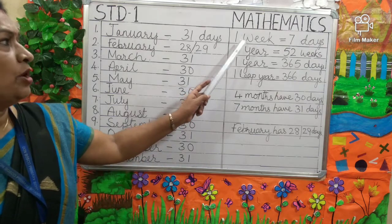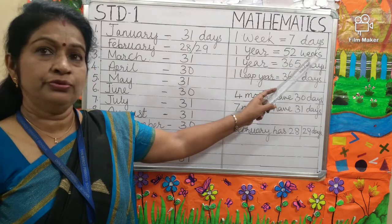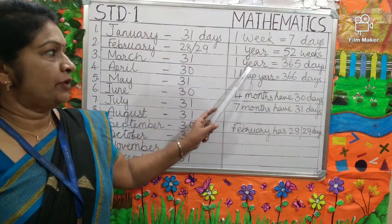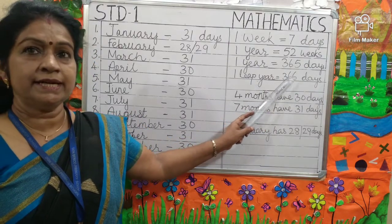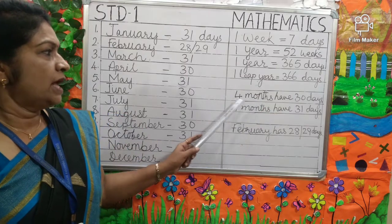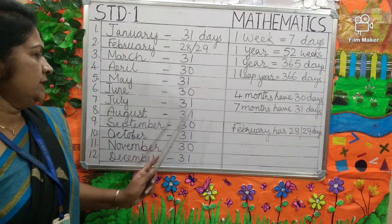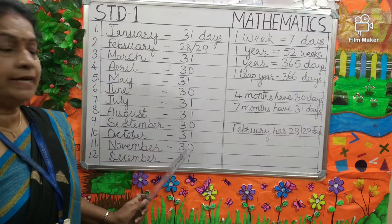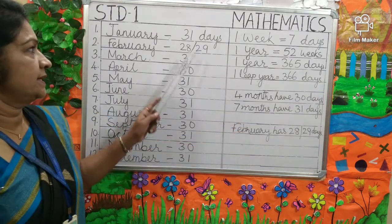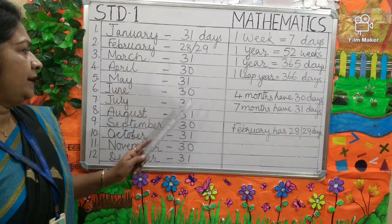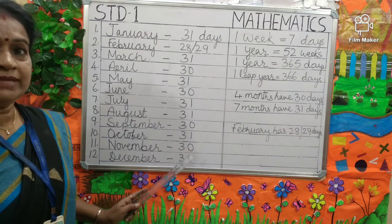Now, 1 week is equal to 7 days. 1 year is equal to 52 weeks. 1 year has 365 days, and 1 leap year has 366 days. 4 months have 30 days: April, June, September and November. And 7 months have 31 days: January, March, May, July, August, October and December.